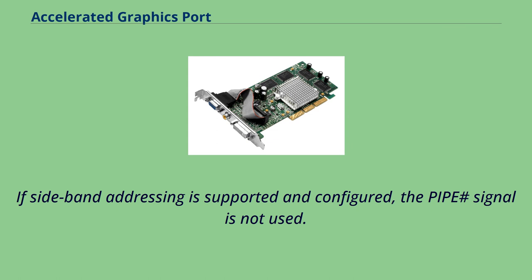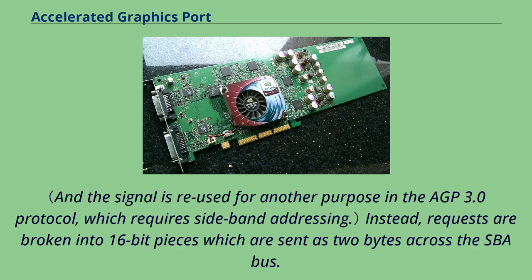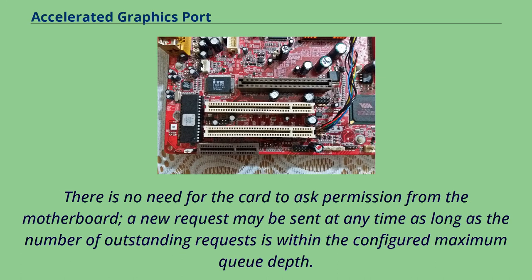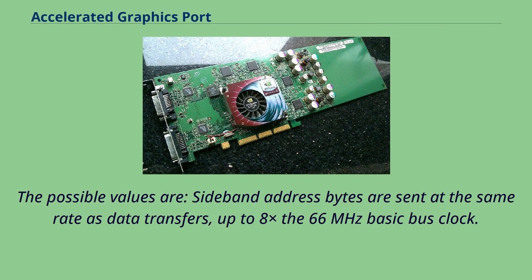If side-band addressing is supported and configured, the PIPE# signal is not used. Instead, requests are broken into 16-bit pieces which are sent as two bytes across the SBA bus. There is no need for the card to ask permission from the motherboard; a new request may be sent at any time as long as the number of outstanding requests is within the configured maximum queue depth. Side-band address bytes are sent at the same rate as data transfers, up to 8 times the 66 MHz basic bus clock.